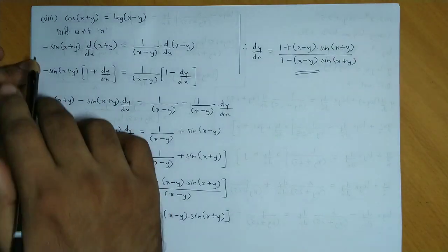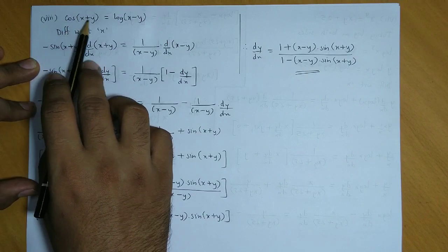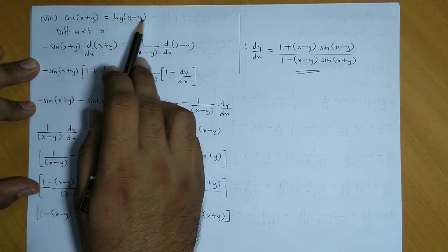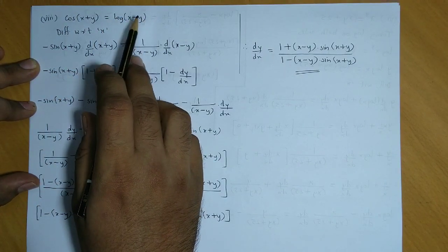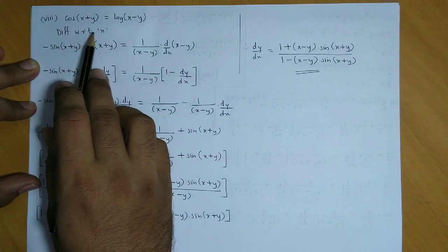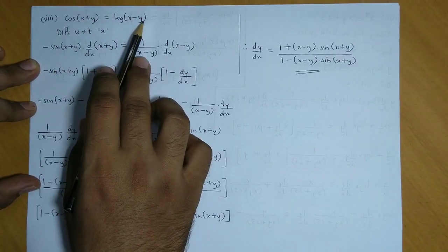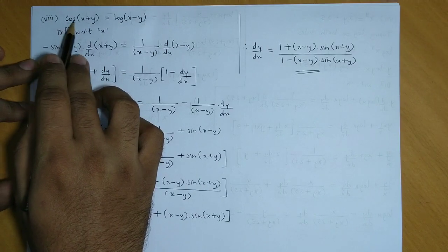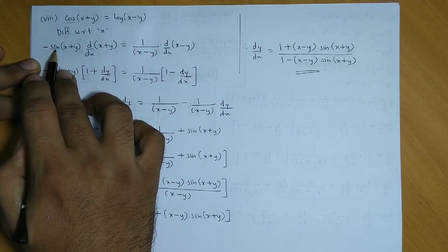Sub question number eight: cos of x plus y is equal to log of x minus y. Now here we directly differentiate with respect to x on both the sides. So first we take derivative of cos term. Cos derivative is minus sin, so here we get minus sin x plus y.